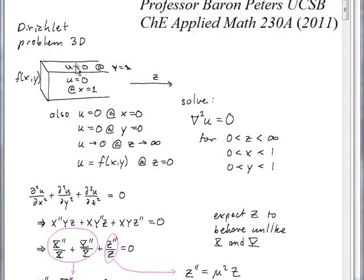The unknown u, that's a function of x, y, and z, is equal to 0 on this surface, which is y equals 1. Also down below, we have u equals 0 at y equals 0. And here on this front face, we have u equals 0 at x equals 1. And on the back side, we have u equals 0 at x equals 0.